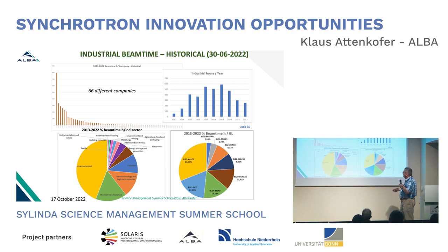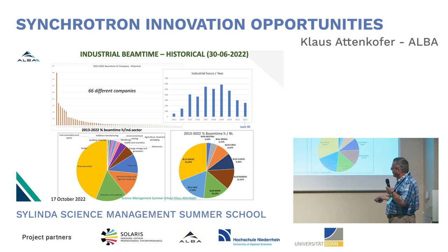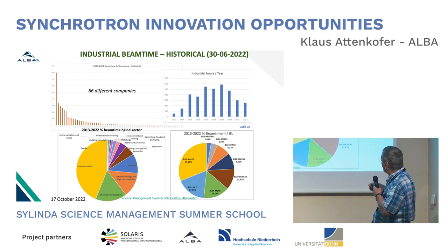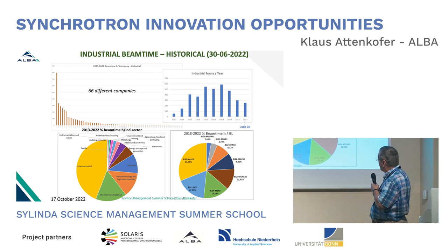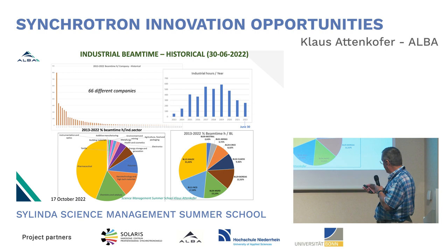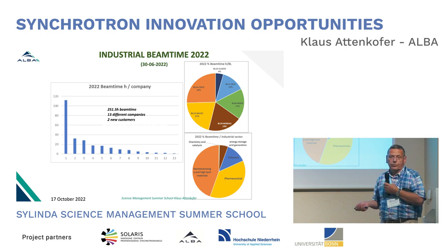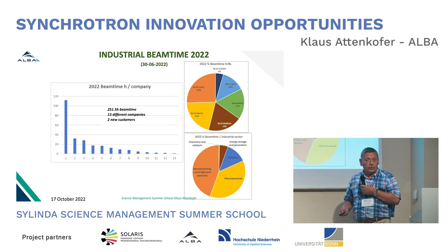Now, the industrial program. Nearly everywhere in the world you see the same picture: the pharmaceutical industry is the dominating user of these facilities. There is also chemical industry and catalysis, nanotechnology and polymers, and a bunch of other industrial sectors. Looking at beamtime distribution, the MX beamline dominates for pharmaceutical users. But looking at last year, something really interesting is happening: nanotechnology and pharmaceutical technology are starting to become equal — which may indicate a huge emerging need.